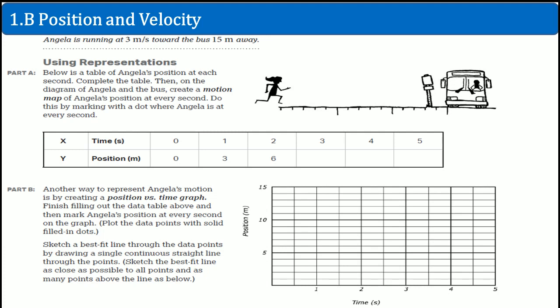Welcome, this is the AP Physics Workbook Solution. Here we have one point B, which is the position and the velocity. So here, Angelica is running at 3 meters per second towards the bus that is 15 meters away.